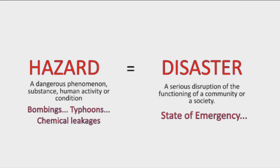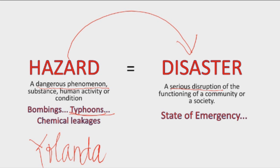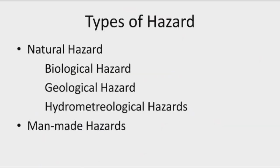Let's look at the major difference: a hazard is a dangerous phenomenon, while a disaster is a serious disruption caused by a hazard. Typhoon Yolanda caused major human, economic, and environmental losses, and Tacloban was unable to support itself and rise up on its own — it was in a state of emergency. That is why they needed help, and that was a disaster.